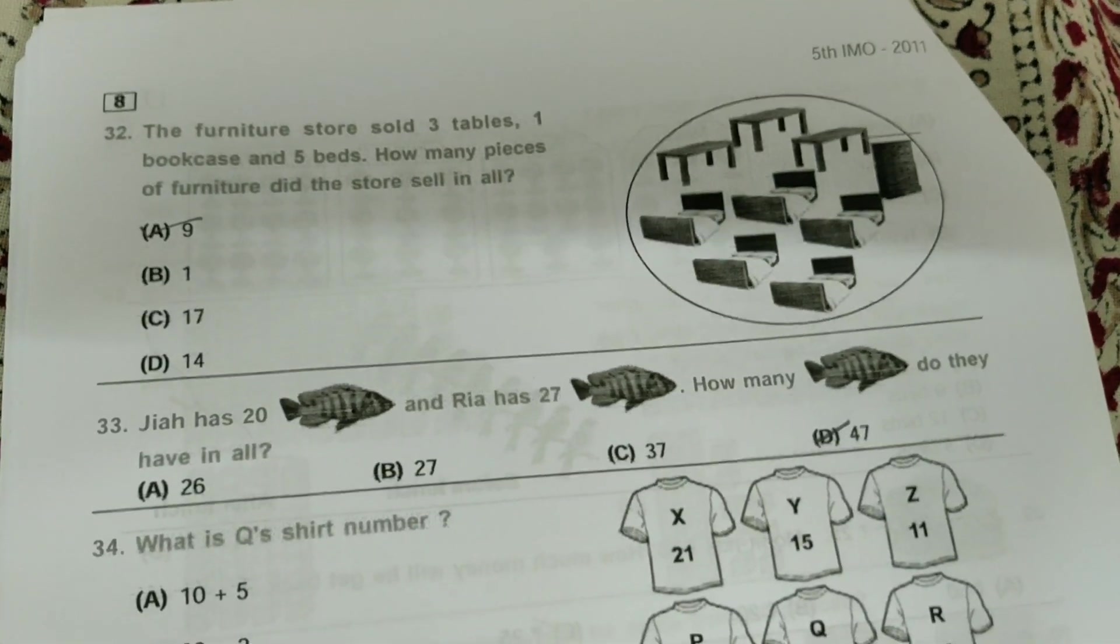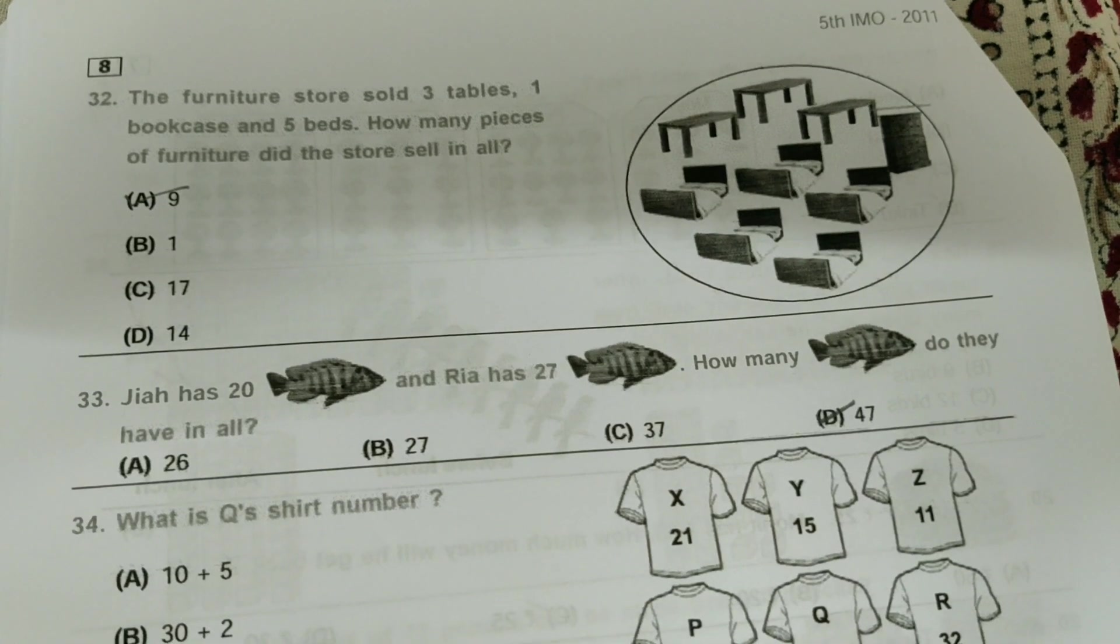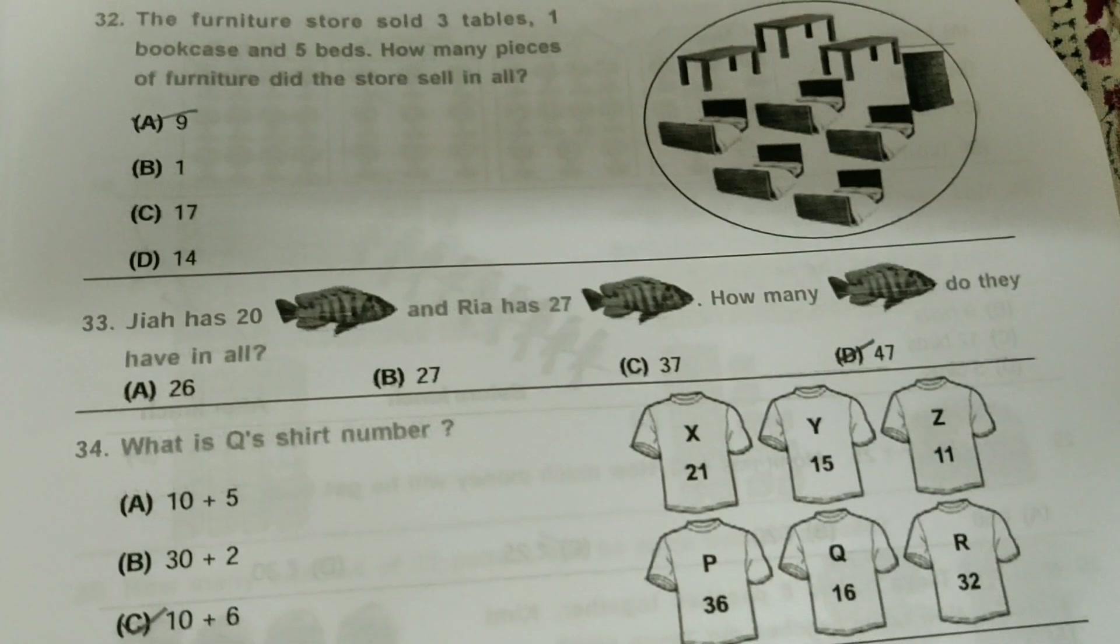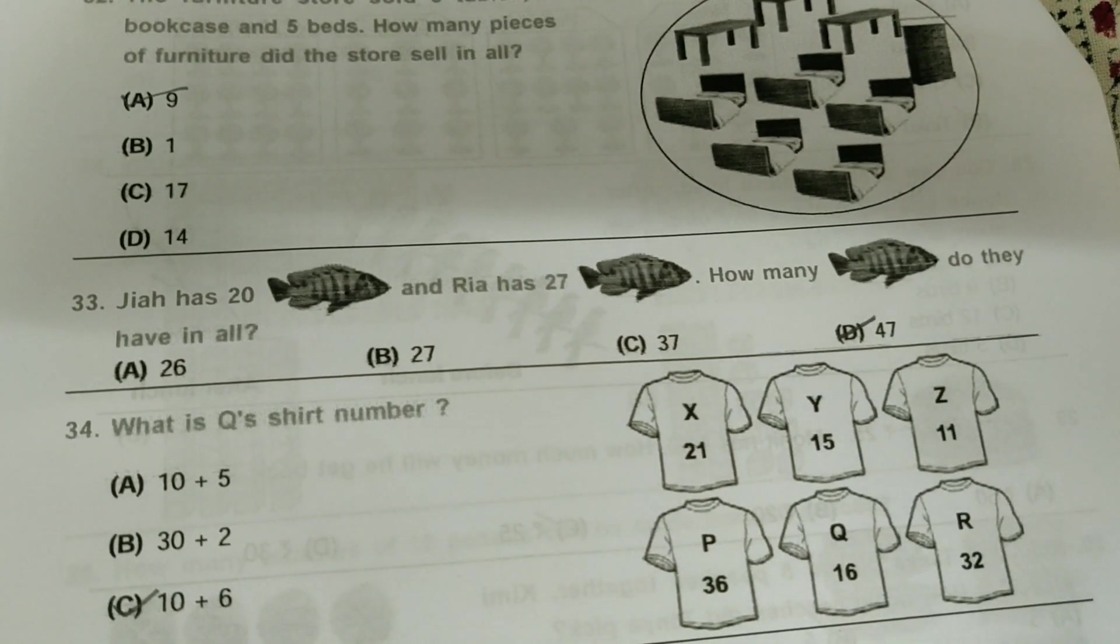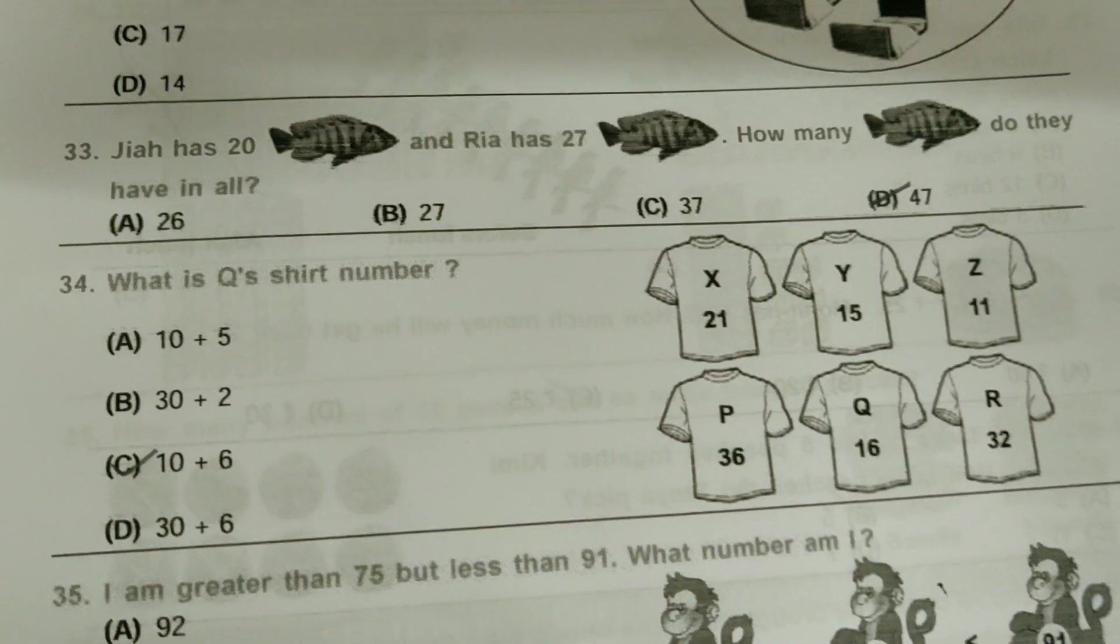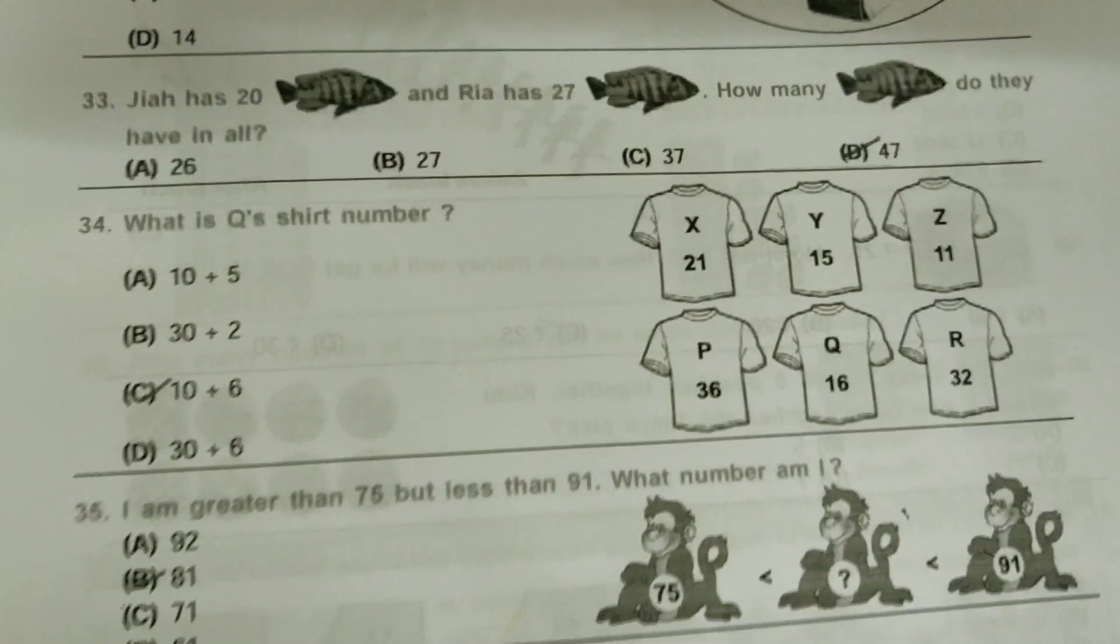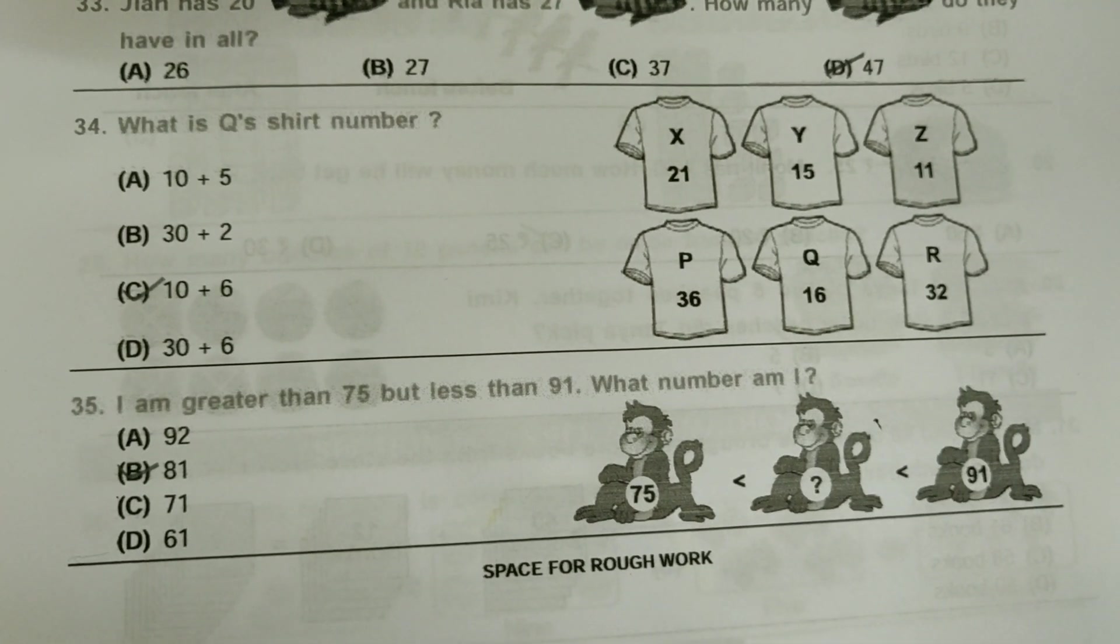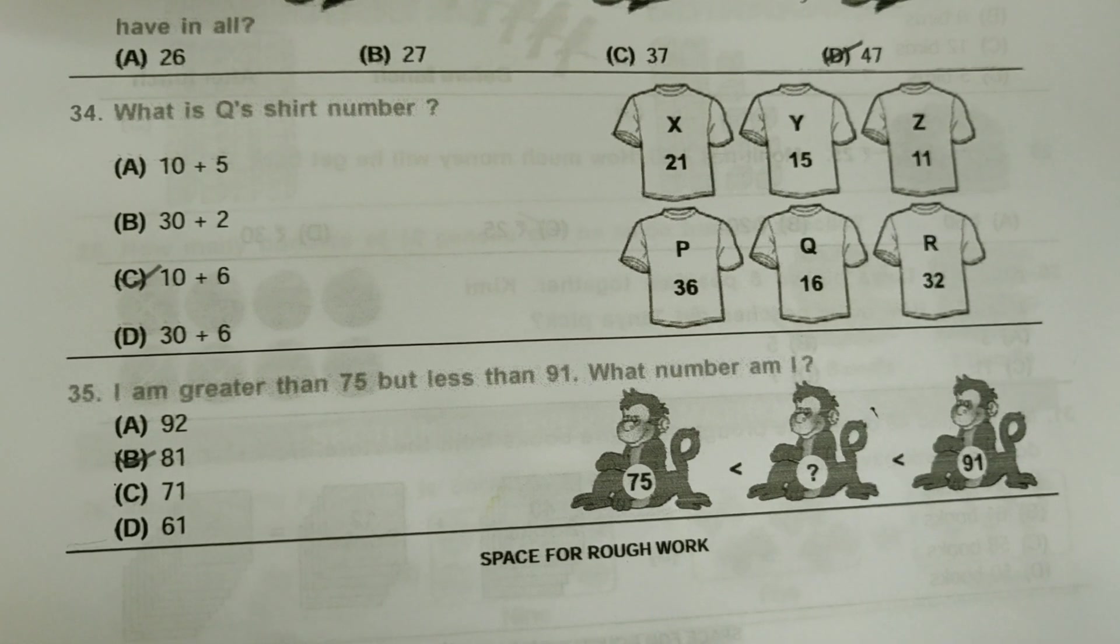The furniture store sold 3 tables, 1 bookcase and 5 beds. How many pieces of furniture did the store sell in all? The answer is 9. Gia has 20 fish and Rhea has 27 fish. How many fish do they have in all? The answer is 47. What is Q's shirt number? C bit, 10 plus 6, because it's 16. I am greater than 75 but less than 91. What number am I? 81.